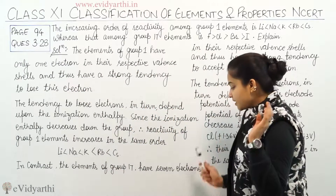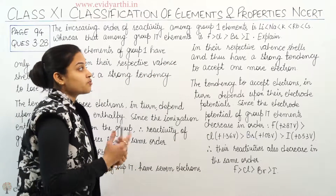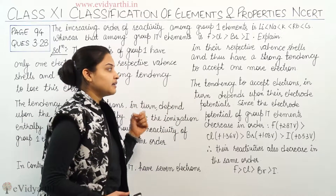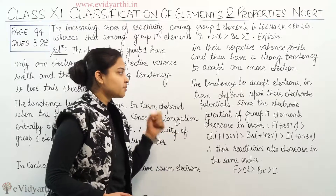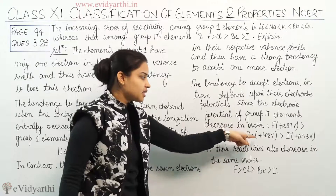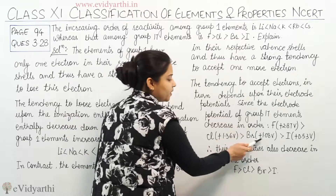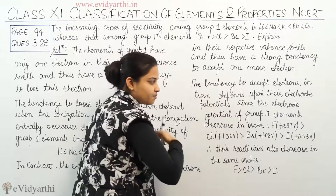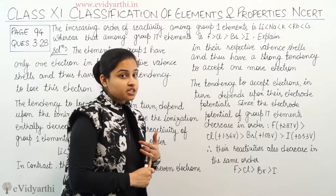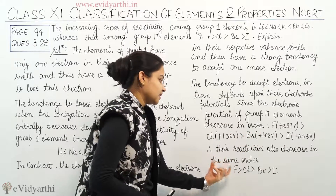The elements of Group 17 have 7 electrons in their respective valence shells and thus have a strong tendency to accept one more electron. The tendency to accept an electron in turn depends upon their electrode potential. Since the electrode potential of Group 17 elements decreases — with the highest for fluorine, then chlorine, then bromine, then iodine — the reactivity is also decreasing down the group.